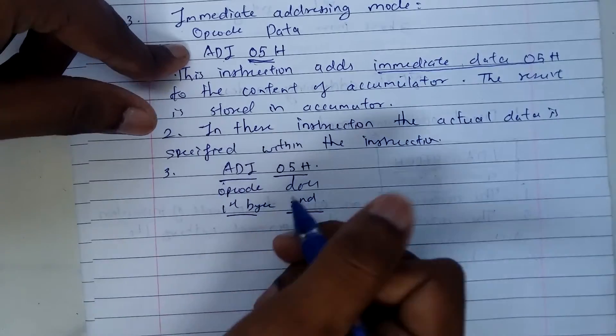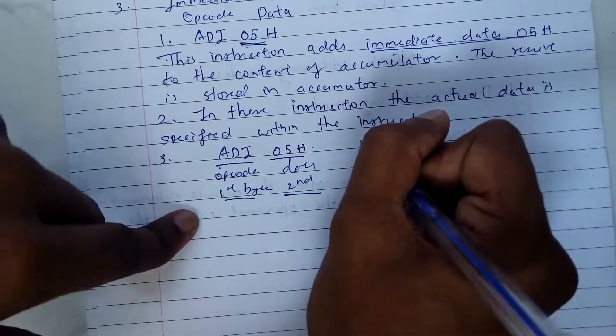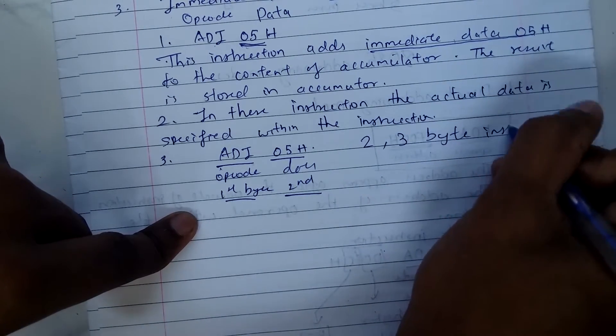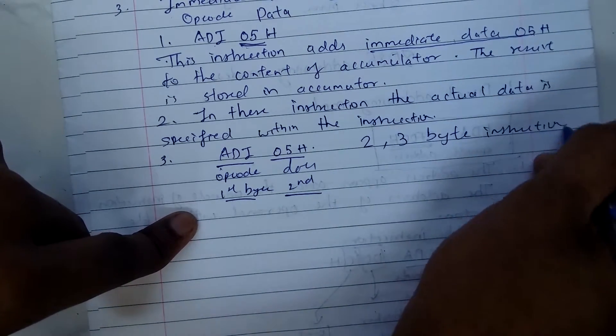So in this immediate addressing mode, the data can be two or three bytes—sorry, the instructions can be two or three bytes.